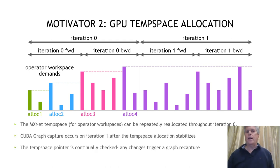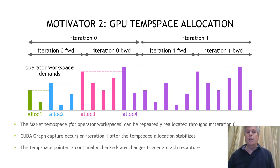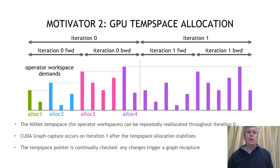To handle this, we defer any graph capture to the second iteration, at which point the temp space allocation has stabilized. Also, to build robustness into the system, we always check the temp space prior to launching a captured graph. If the temp space has changed, we recapture the graph.